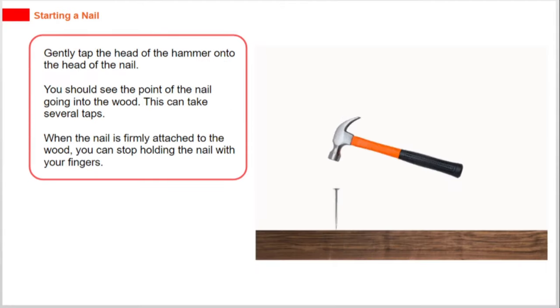Simply tap the head of the hammer onto the head of the nail. You should see the point of the nail going into the wood. This can take several taps. When the nail is firmly attached to the wood, you can stop holding the nail with your fingers.